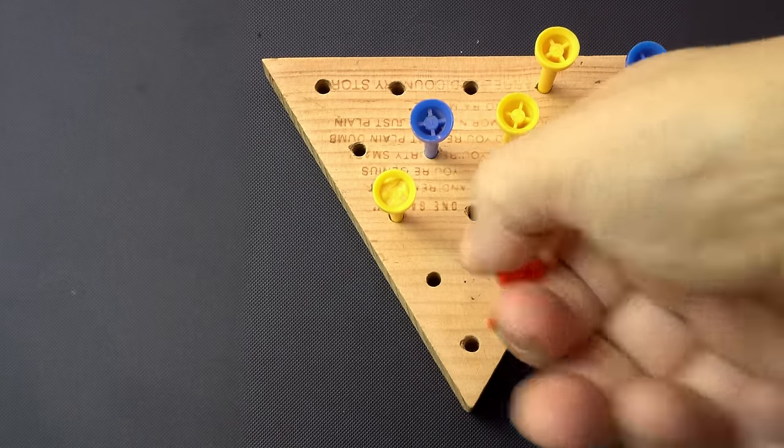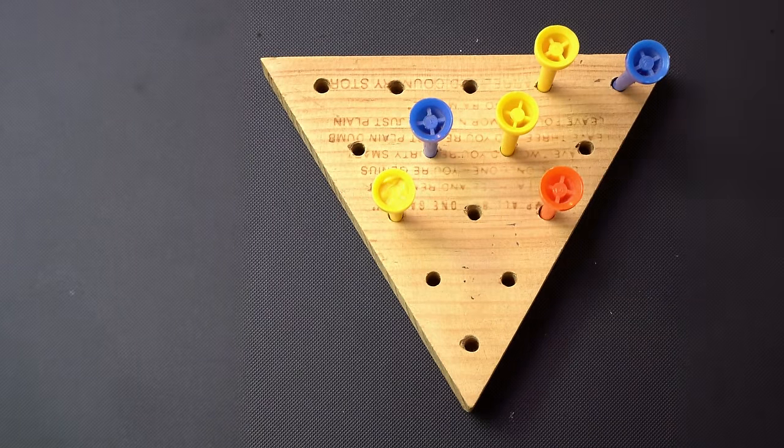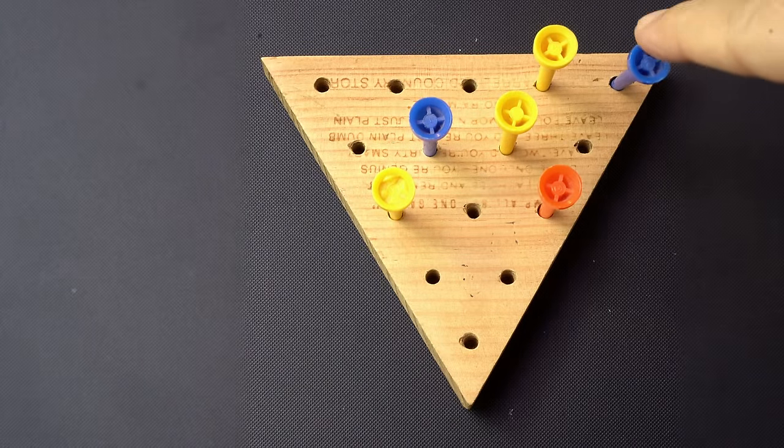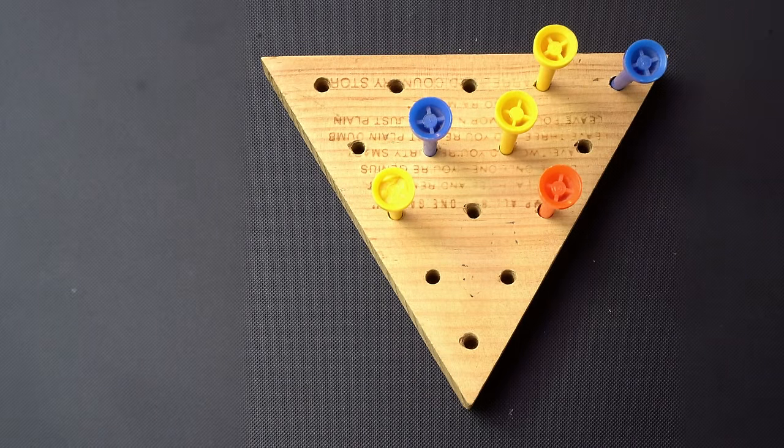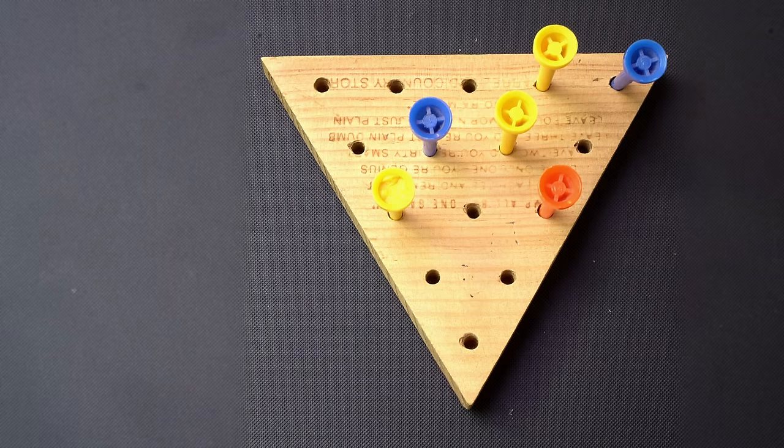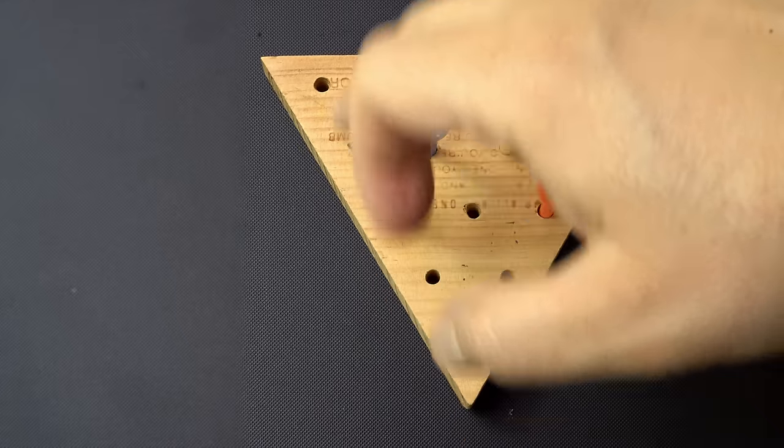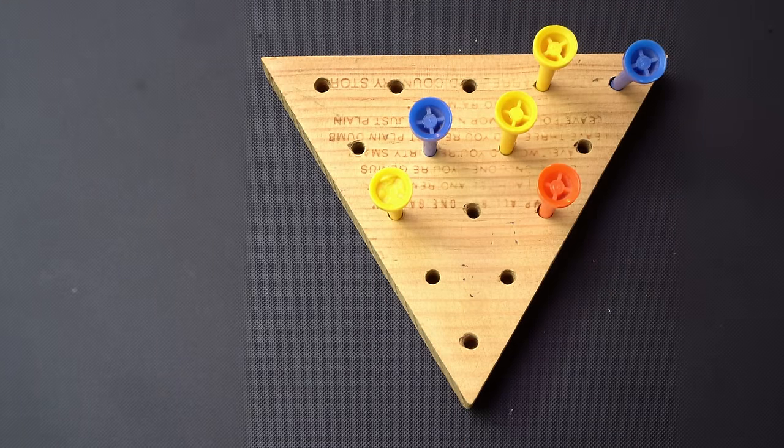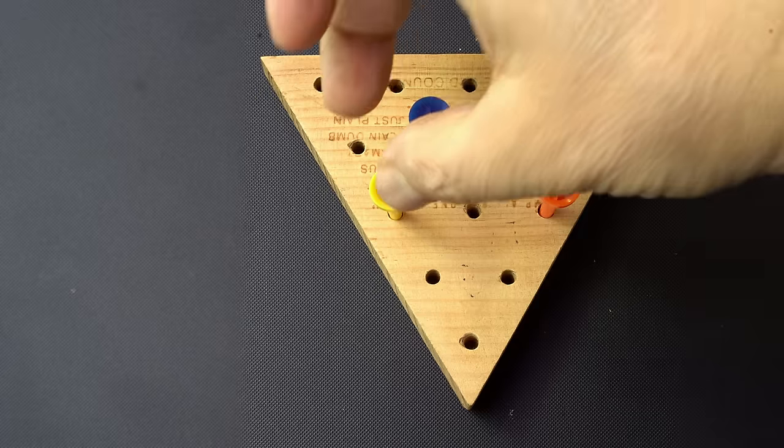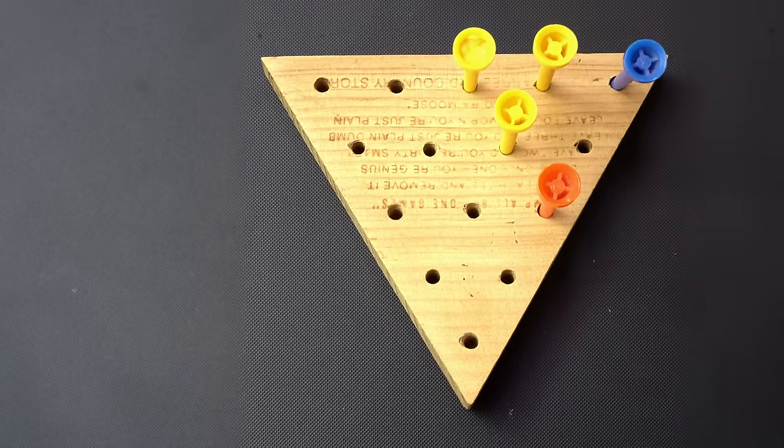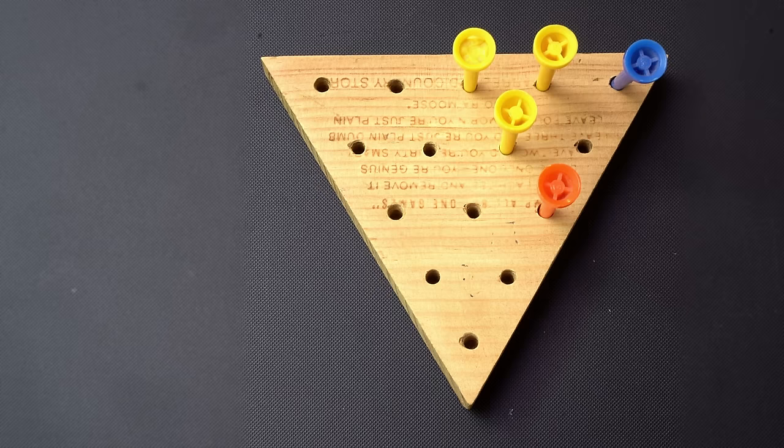Now from here, you have two choices, right? You cannot move this one. If you move this one over, the game is over—you will not leave one. So you have two choices: you can move this here or this here. Being consistent, we're moving things left to right, so let's move this first. And from here, you're in the home stretch.